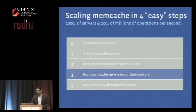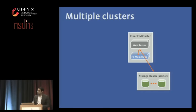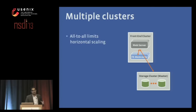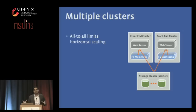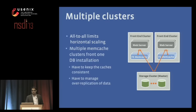Now let's move on to multiple clusters — thousands of servers and hundreds of millions of operations per second. Here's our view of our front-end cluster, condensed down. The all-to-all problem limits our scalability: if you just keep adding web servers and cache servers, it only gets worse. So we need to add a second cluster — a cluster being a collection of web servers and a cache cluster together — meaning two copies of our installation. Now comes the problem of how we keep these caches consistent and how we manage the over-replication of data.